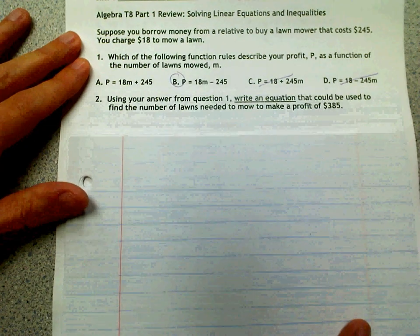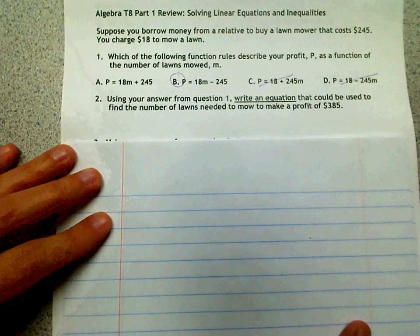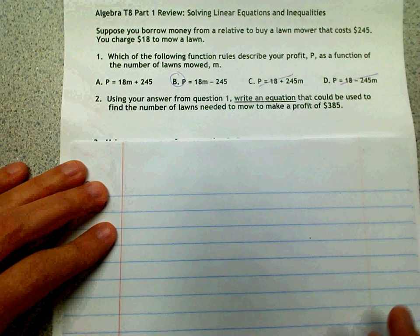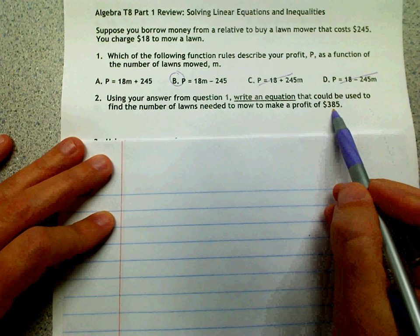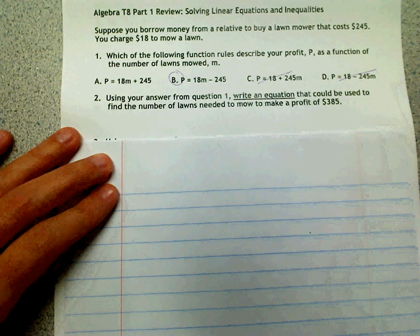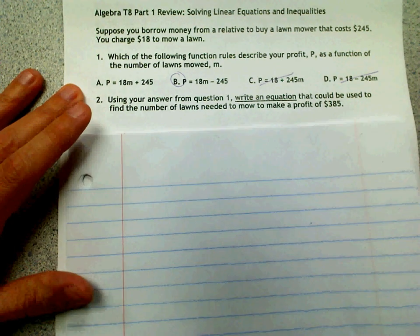Now for part two, it says to write an equation that we could use to find the number of lawns mowed to make a profit of $385. So our profit, our P, is $385.